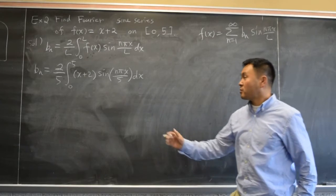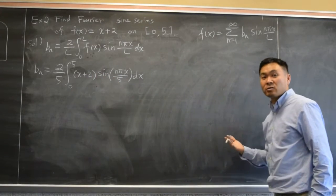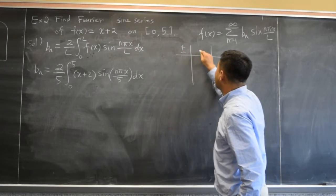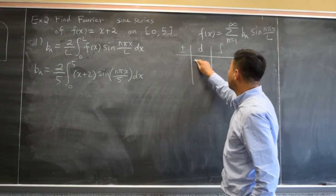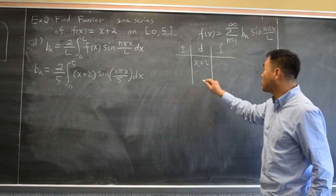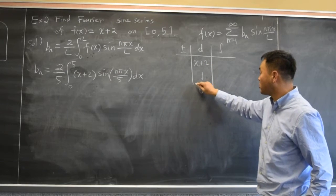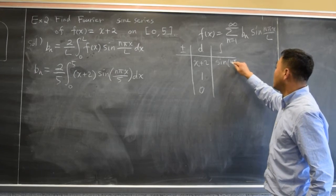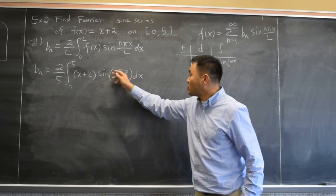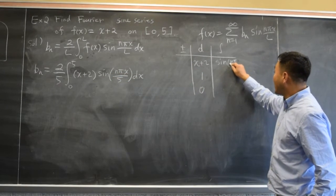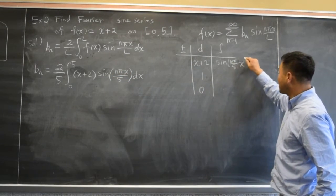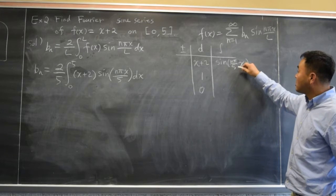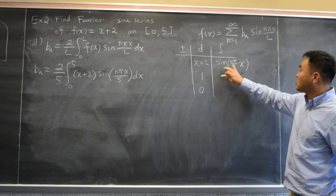And because I have a product of two functions, I need to use either integration by parts or tabular integration. Let's use tabular. That's my favorite. x plus 2 is the one you have to differentiate. Differentiates to 1. Differentiating 1 gives you 0. Stop here. Sine n pi x over 5. This sine n pi x over 5 can be written as sine of n pi over 5 times x. This and that is the same thing. The reason I want to write this in this format is because this thing looks like sine of a x.